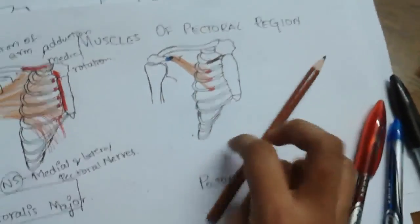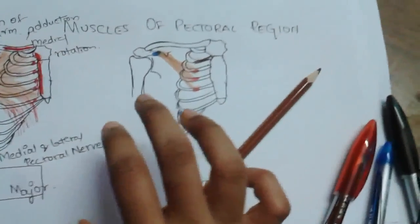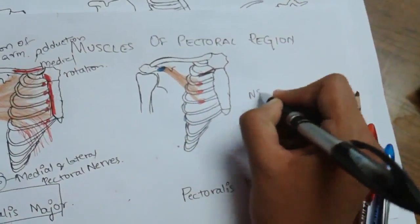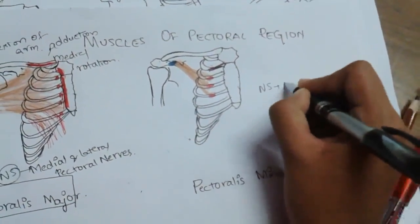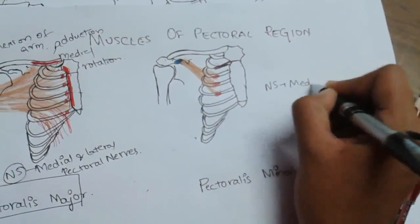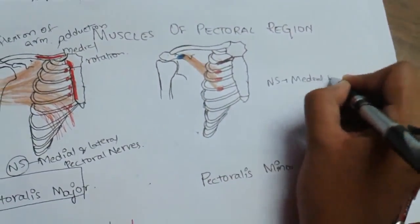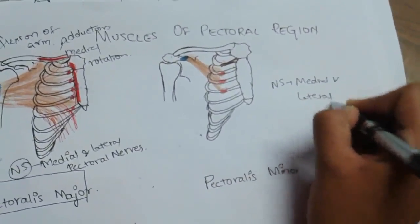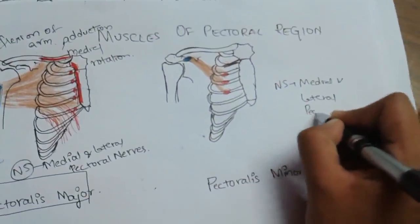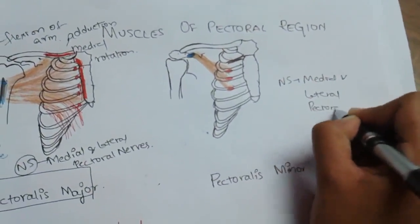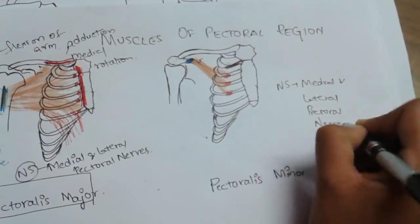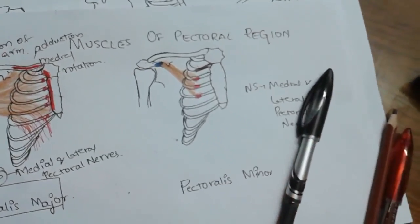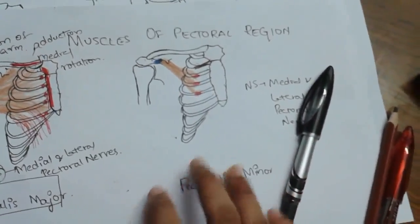The nerve supply of pectoralis minor is the same as pectoralis major — medial and lateral pectoral nerves. Now let us look at the action of pectoralis minor.